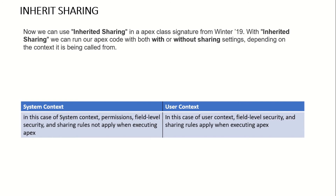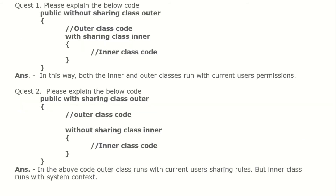With sharing means user context — it depends on the user. Most interviews will ask what is system context or user context. System context means without sharing — without any boundary it can pull every data, like the complete Maharashtra data. User context is specific to the user and what access they have — it will pull data according to that access. This is the only difference between system context and user context.